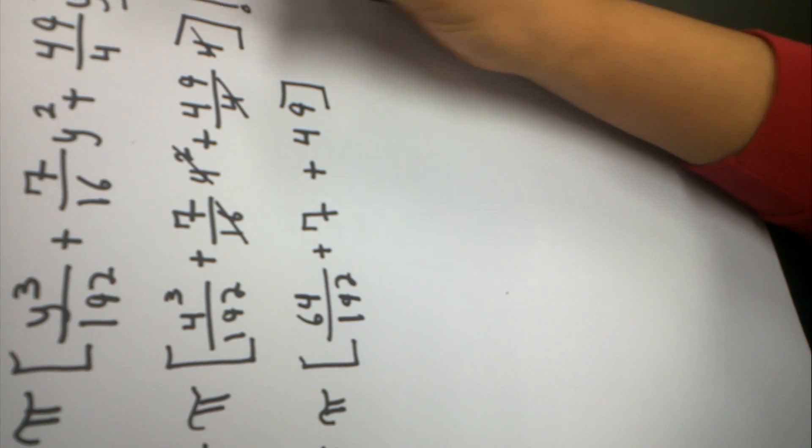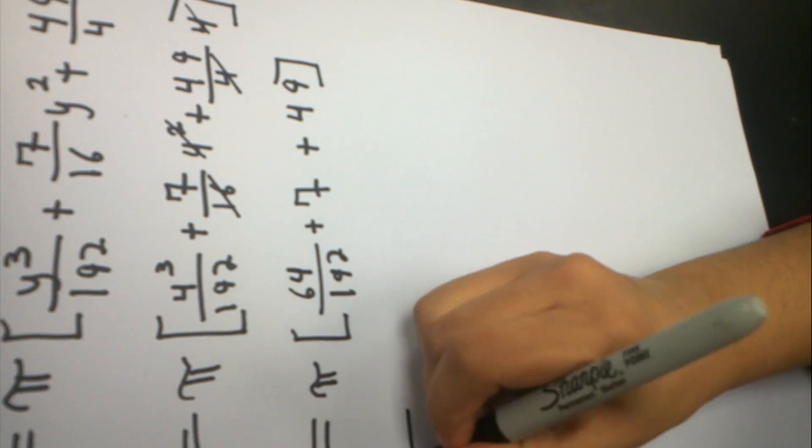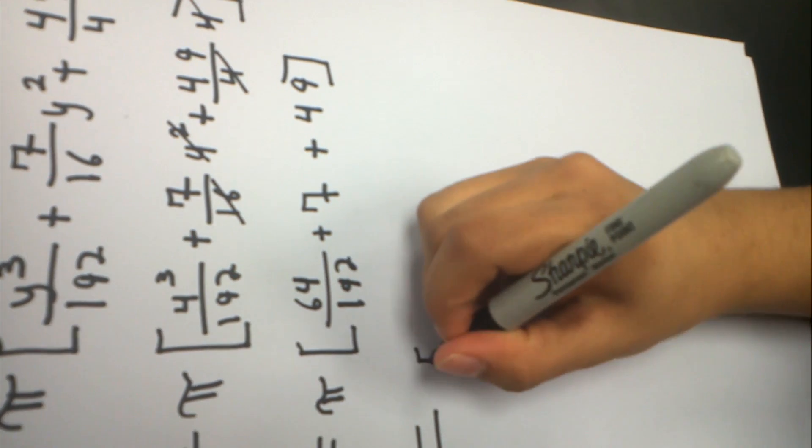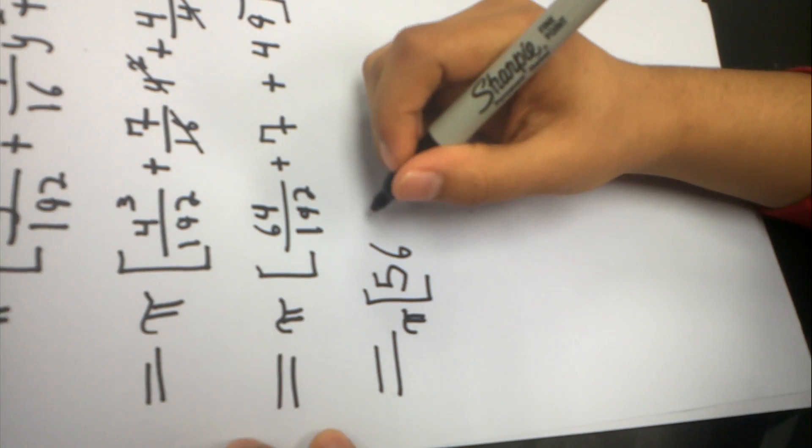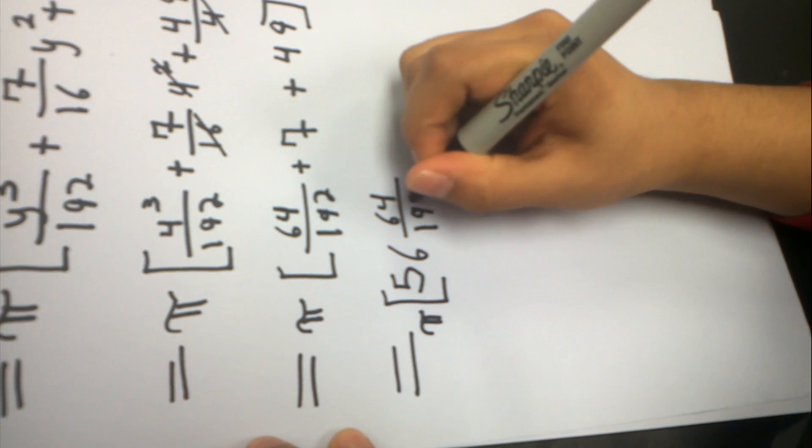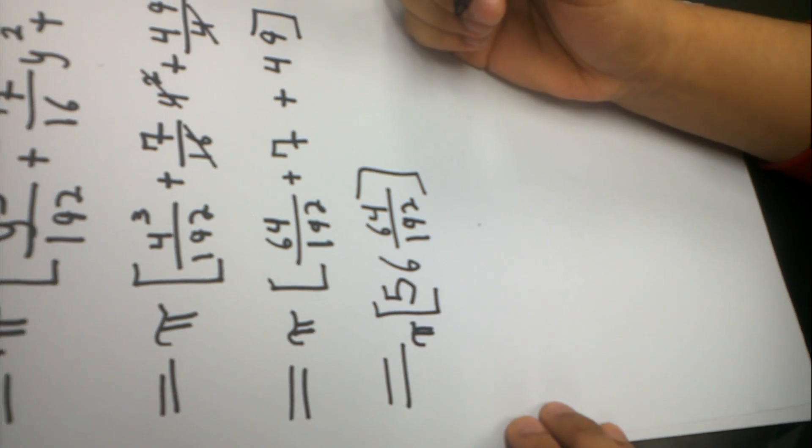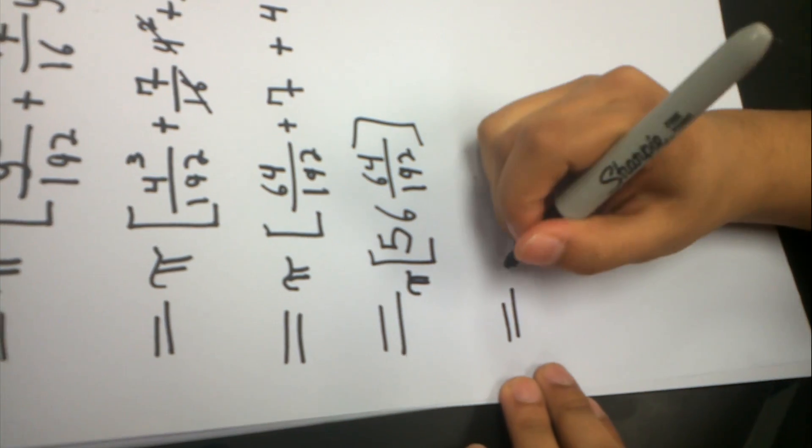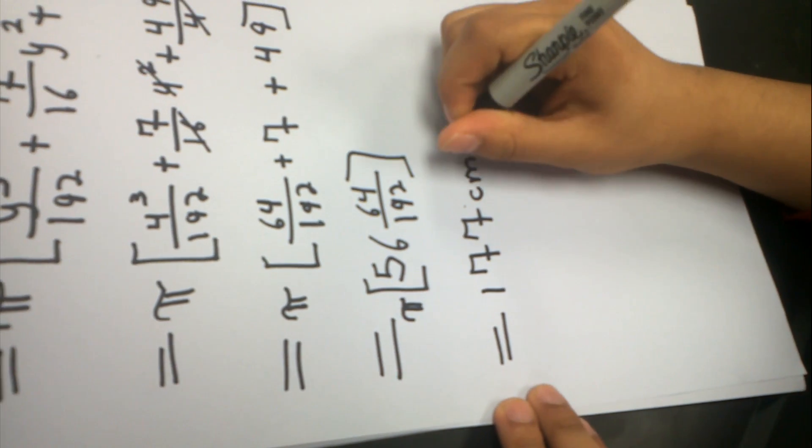Now, I have to plug in π. Well, first I'm going to add this and then plug in for π. So if you add this all together, we get, of course it's π times 56 and 64/192. Now I'm going to multiply this by π. The answer I get is 177 centimeters cubed.